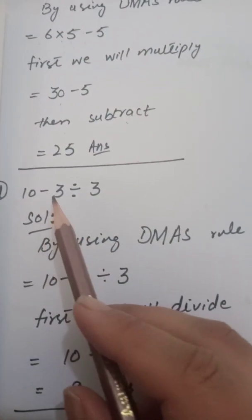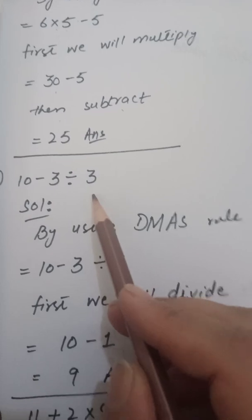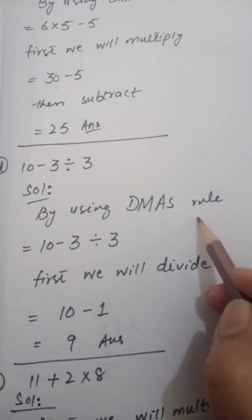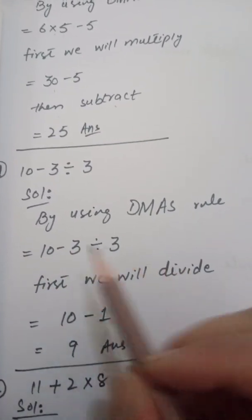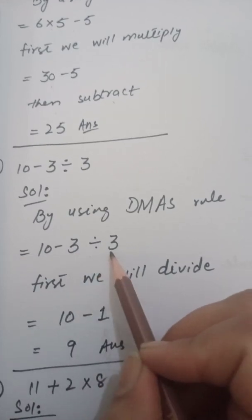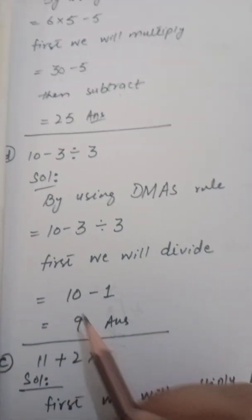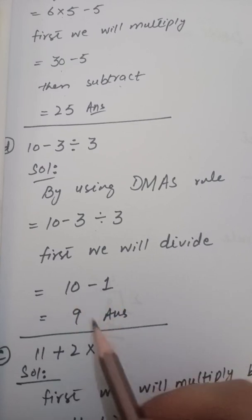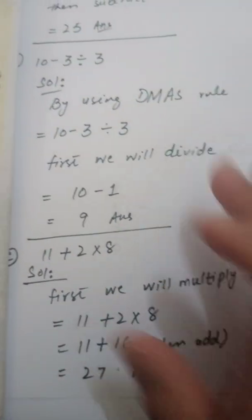Part number D, 10 minus 3 divided by 3. By using DMAS, first we will divide. When you divide 3 by 3, you will get 1. Now you will subtract. 10 minus 1, what will come? 9 will come.